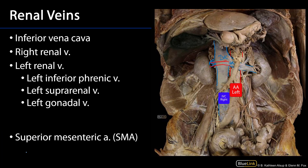There's also asymmetry in the tributaries draining various viscera. On the left side, I can see a common trunk consisting of a left inferior phrenic vein — which drains the inferior surface of the diaphragm on the left side — as well as a left suprarenal vein, draining blood from the suprarenal gland into the left renal vein. I can also see a left gonadal vein draining into the left renal vein.